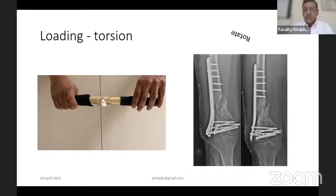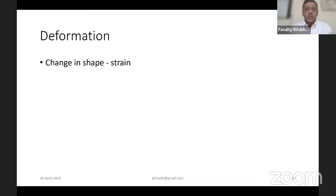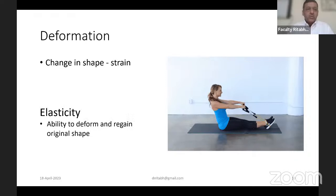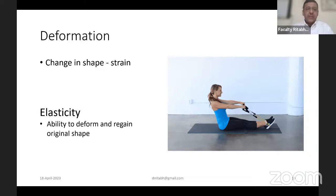Now we talk of deformation — change in shape. It could be a change in length, like the tennis ball changing from round to oval, or the car tire flattening out. Change in shape is called strain in mechanical terms. An elastic band being stretched changes in length and returns to its original length — which introduces the term elasticity: the ability to deform and then regain the original shape.